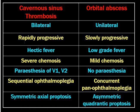To differentiate cavernous sinus thrombosis from orbital abscess: cavernous sinus thrombosis is bilateral with symmetrical axial proptosis and rapid progression, whereas orbital abscess is unilateral with slow progression. Hectic fever is a feature of cavernous sinus thrombosis; low-grade fever is a feature of orbital cellulitis. Severe chemosis and paresis of cranial nerves VI, III, and IV with sequential ophthalmoplegia characterize cavernous sinus thrombosis. Orbital abscess shows asymmetric, non-axial proptosis.